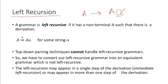This is what we call immediate left recursion. That means immediately after this arrow, we are getting this head symbol at the beginning — immediately we are getting it. So we call it immediate left recursion.